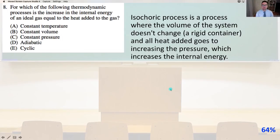Number 8. For which of the following thermodynamic processes is the increase in the internal energy of an ideal gas equal to the heat added to the gas? So an isochoric process is a process where the volume of the system doesn't change. For example, a rigid container. And all heat added goes to increasing the pressure, which increases the internal energy. So that would be answer B because we would have constant volume.